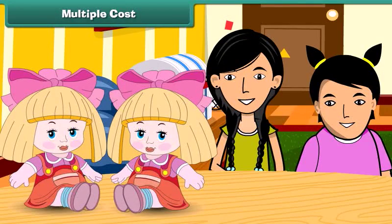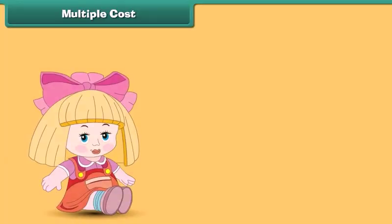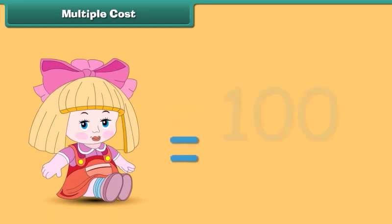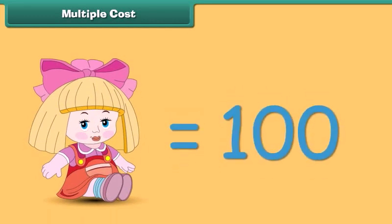Let us hear what these girls are talking. My mother bought these two dolls — one for me and one for my younger sister. The unit cost of a doll is 100 rupees. Do you understand the term unit cost? Unit cost is the cost of a single unit.